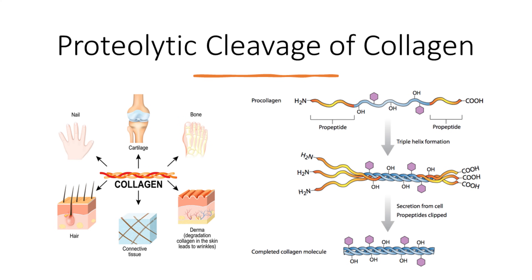In collagen protein, there are only three amino acids: glycine, proline, and lysine. This means that the terminal amino acid, methionine, is cut off from that protein by enzymes called proteases.